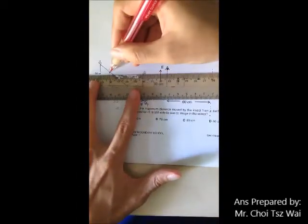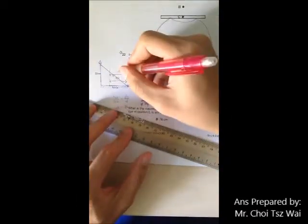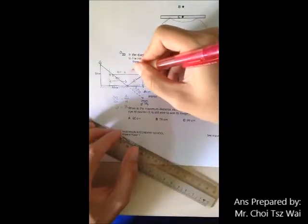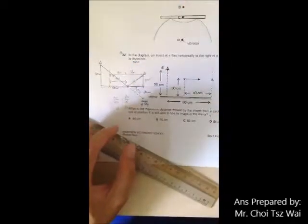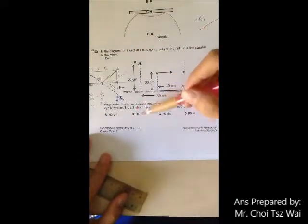Whereby here to here to the edge of the mirror is 40 cm. So what is the total distance the fly flies to this position will be 40 cm plus 36 cm. And that is how you get your answer P, 76 cm.